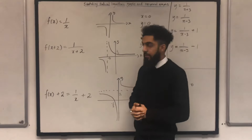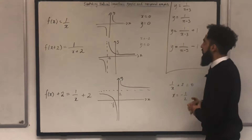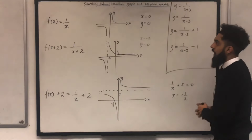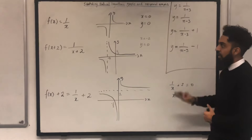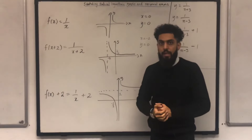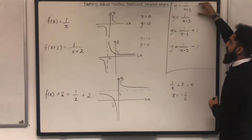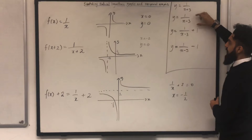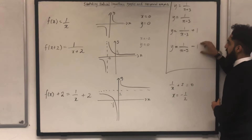By going through transformations on f(x) = 1/x, it should now be easy to sketch each of the following equations. To sketch 1/(x + 3), take the graph of 1/x and shift it 3 units to the left. For 1/(x - 3), shift it 3 units to the right. For 1/x + 1, shift the graph 1 unit upwards. For 1/x - 1, shift it 1 unit downwards.